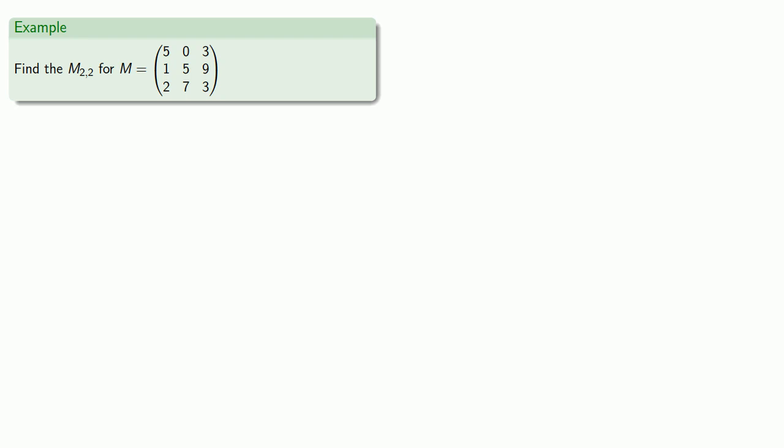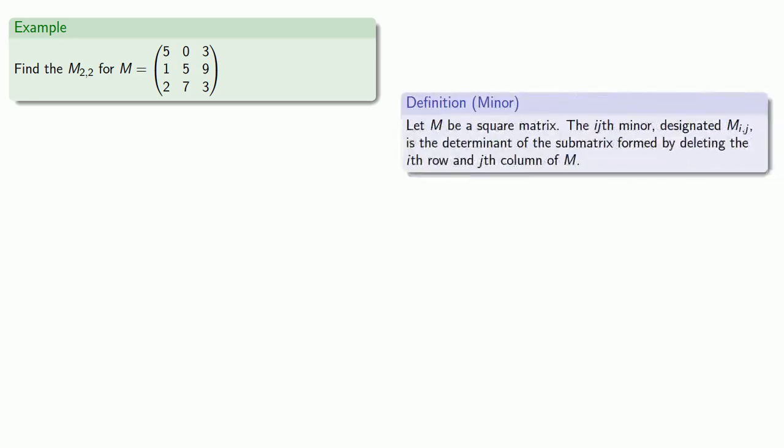So let's find M_22 for this given matrix. Definitions are the whole of mathematics. All else is commentary, so let's pull in that definition. So what we want to do is we want to delete the second row, second column, and that leaves us with the matrix 5, 3, 2, 3. The minor itself will be the determinant of that matrix.